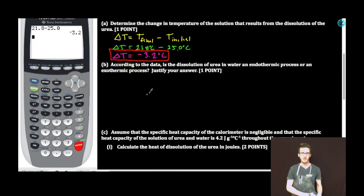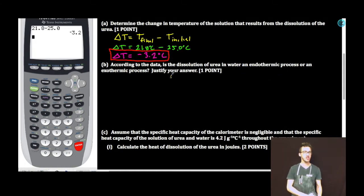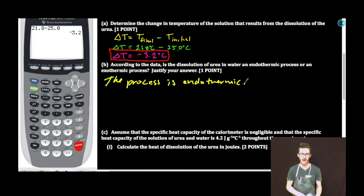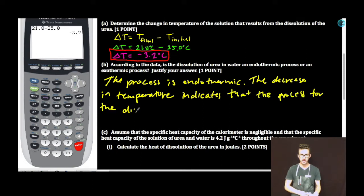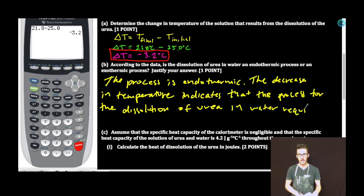Part B: According to the data, is the dissolution of urea in water an endothermic process or an exothermic process? Justify your answer. The process is endothermic. The decrease in temperature indicates that the dissolution of urea in water requires energy.